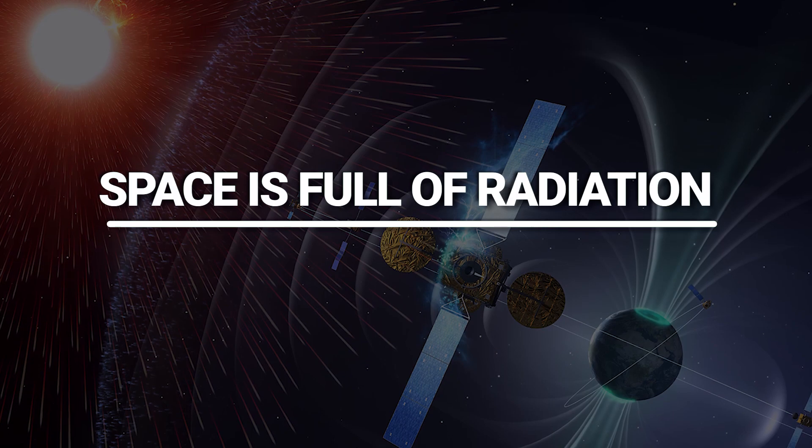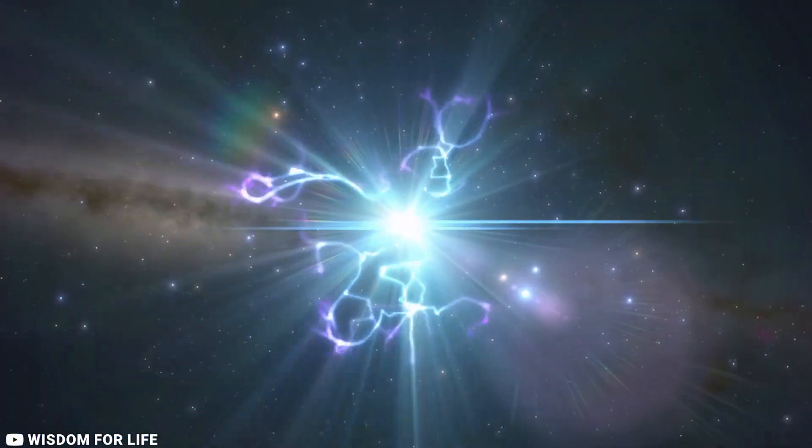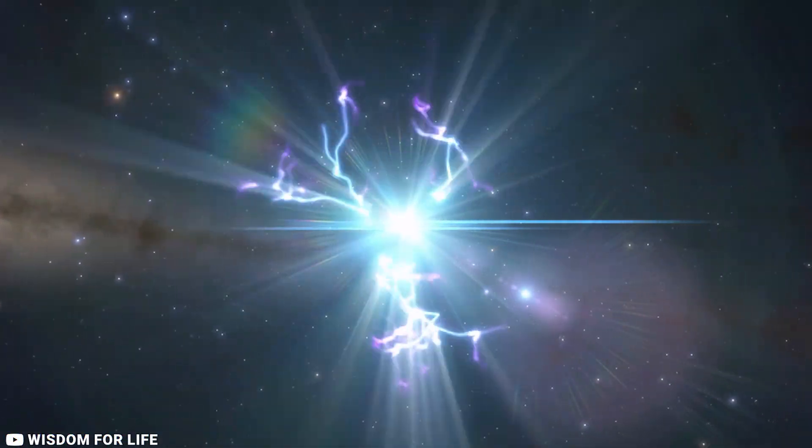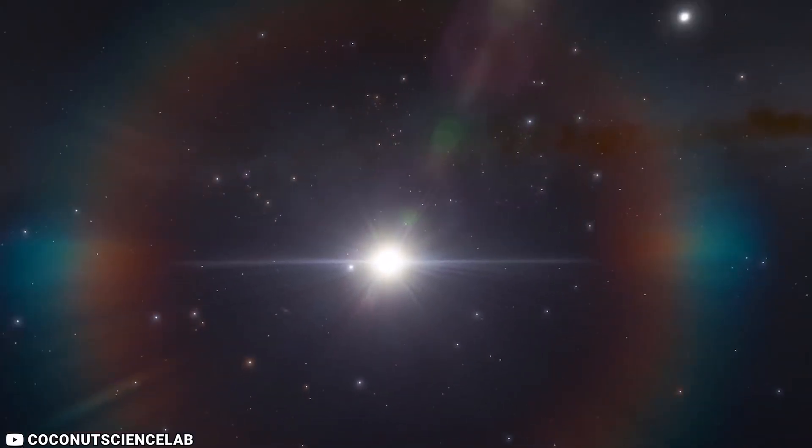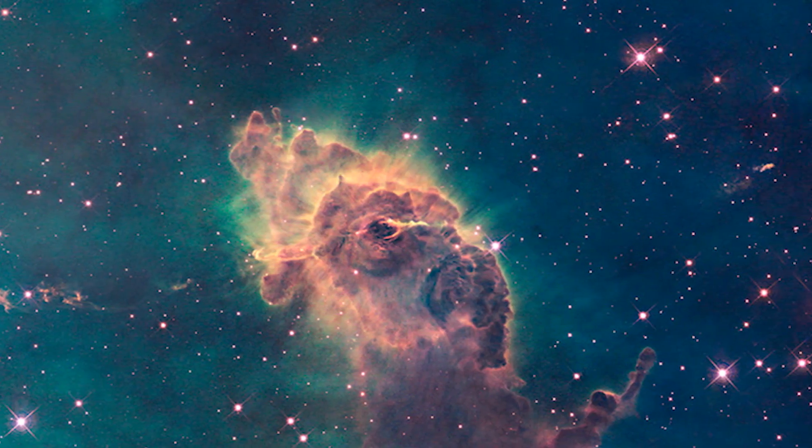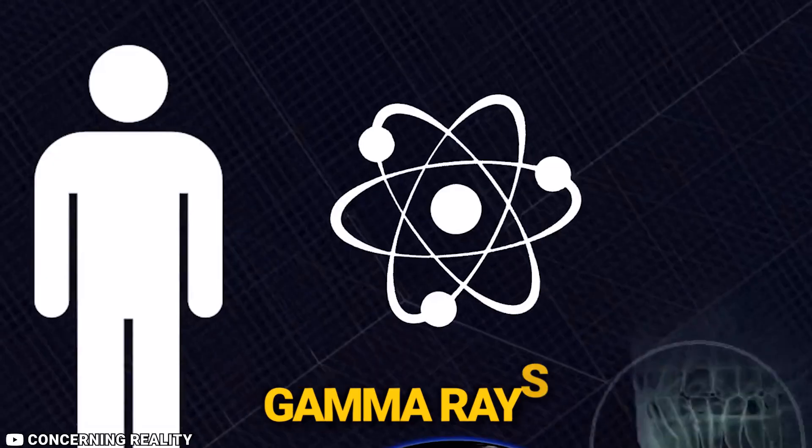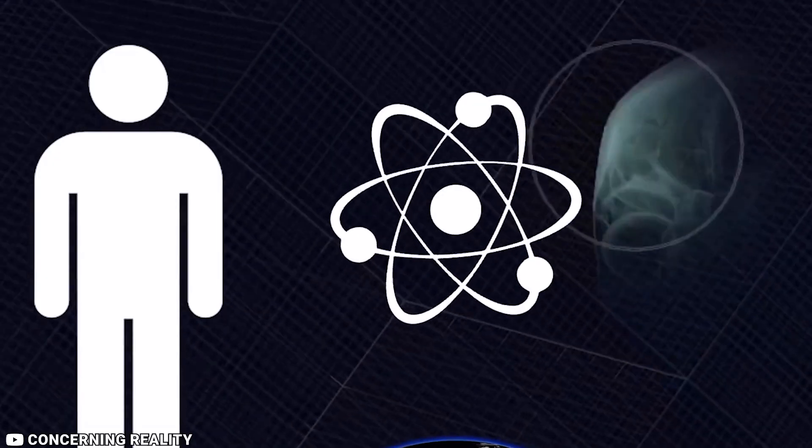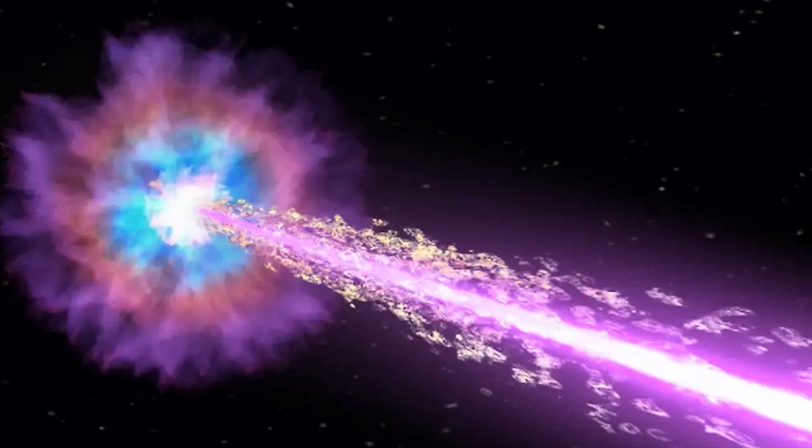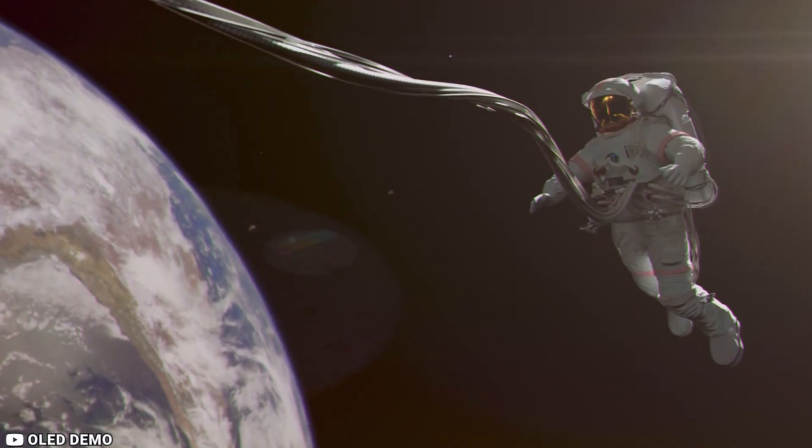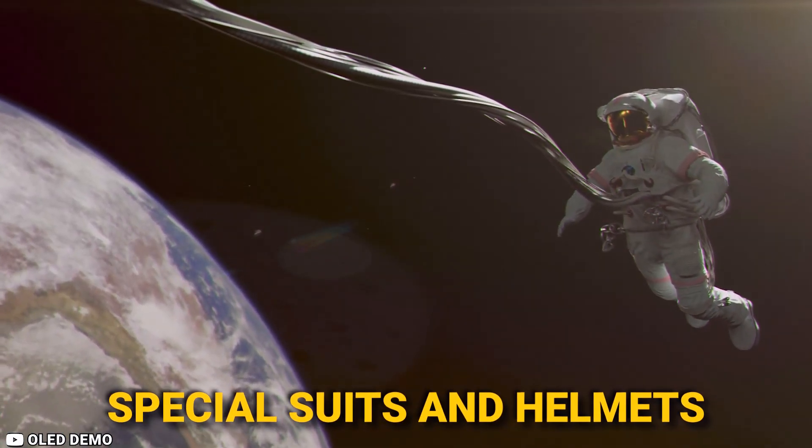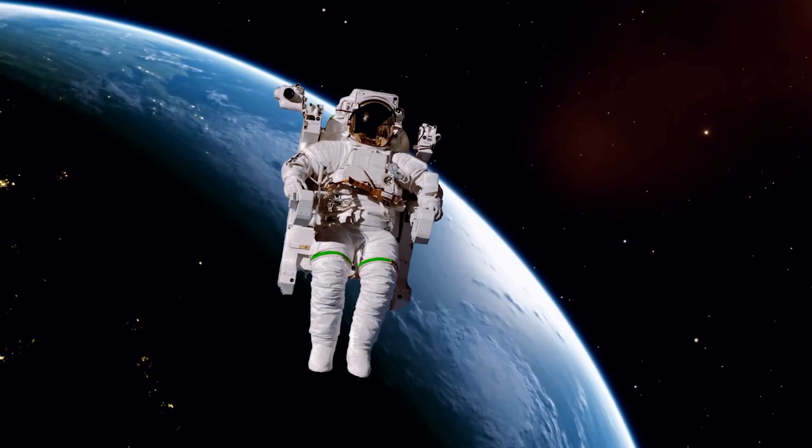Space is full of radiation. Radiation is energy that travels through space in waves. There are many different types of radiation, including visible light, ultraviolet light, x-rays, and gamma rays. Some types of radiation are dangerous to humans, such as ultraviolet light and gamma rays. That's why astronauts wear special suits and helmets to protect themselves when they go into space.